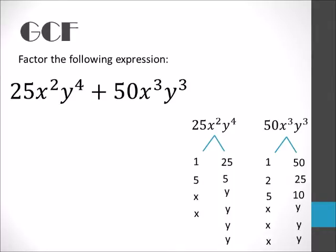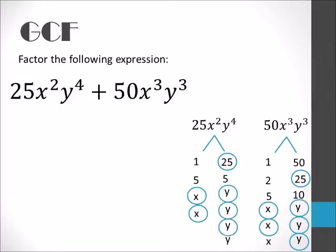So now to figure out what our GCF is, we're going to look for the biggest constant. In this case, 25 is the biggest number that goes into both terms. Next, we know that we can take 2 x's out of both terms and 3 y's out of both terms. So our GCF will be 25x squared y cubed.